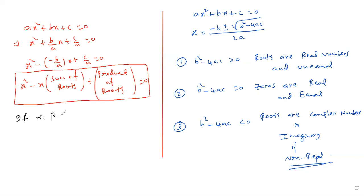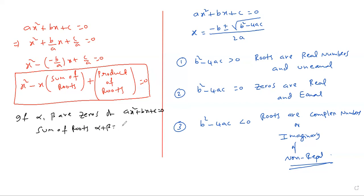If alpha and beta are the zeros or roots of the quadratic equation Ax² + Bx + C = 0, then the sum of roots, alpha + beta, equals −B/A, and the product of roots, alpha × beta, equals C/A. That means, without finding the roots, by simply observing the given quadratic polynomial, you can state the sum as well as the product of the roots.